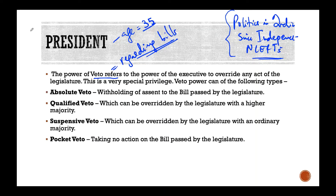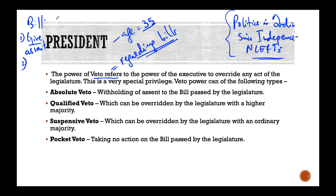Let us say there is a bill. The options the President is going to have: first, you can give assent. This means you're sort of accepting the bill and it becomes an act. So how does the bill become an act? The bill goes to Parliament. It is going to be debated by both houses, and both houses will pass it depending upon what kind of bill it is. And then if both houses pass without any issues, it goes to the President, and the President can give his assent to the bill.